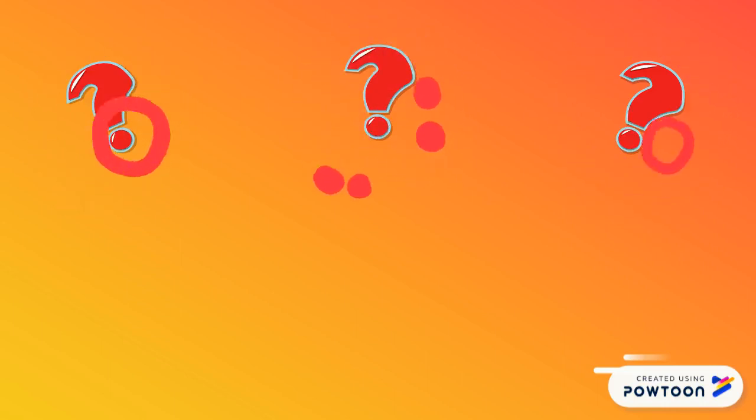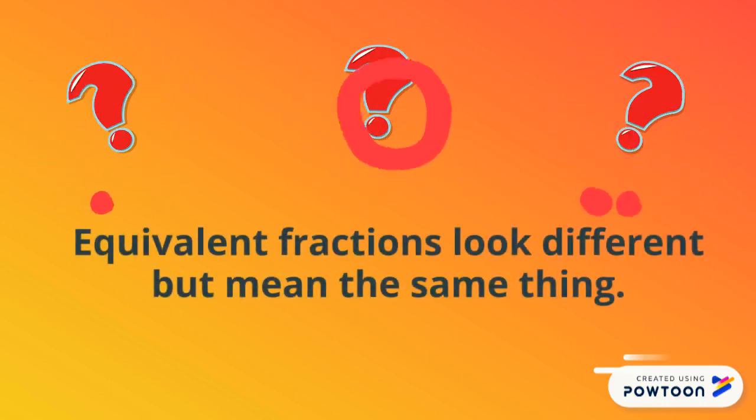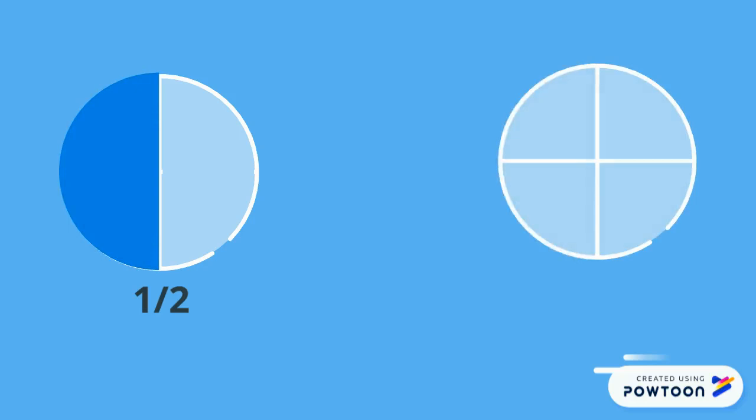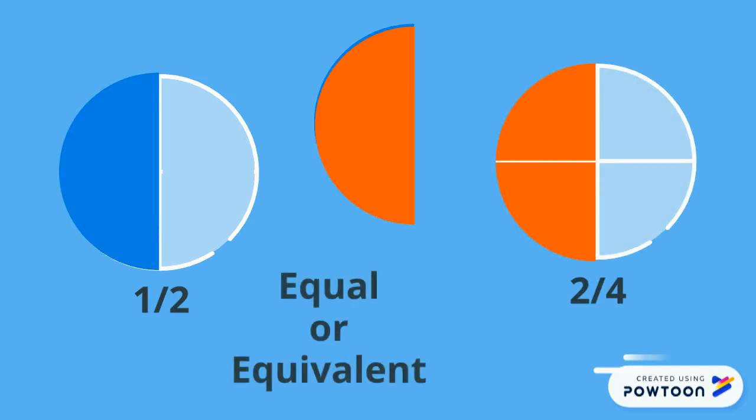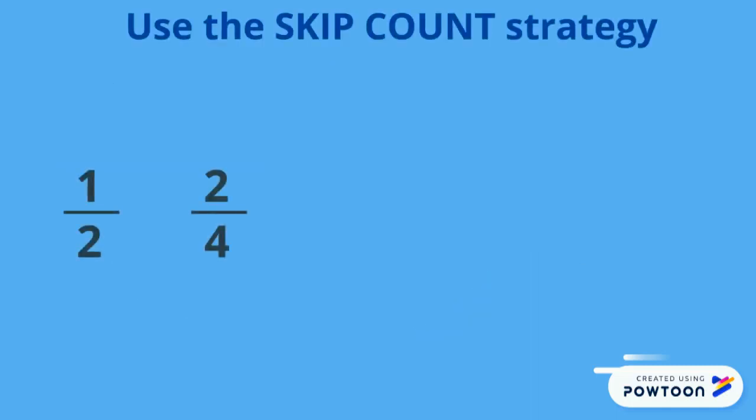Well, equivalent fractions look different but mean the same thing. For example, if we took one-half and we took two-quarters, the shaded portions are exactly the same. They are equal or equivalent. A great strategy you can use to find equivalent fractions is by skip counting.